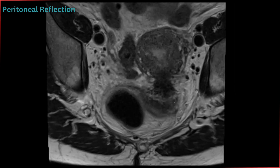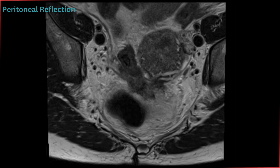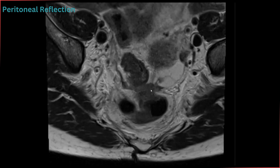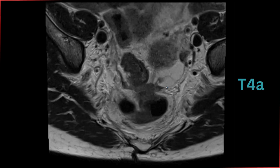This is the uterus, and this is the rectum. In the upper rectum, this whole area with irregular margins and thickening is the tumor. This band-like structure hanging into the pelvis is the peritoneal reflection, and you can see the tumor is clearly infiltrating into this reflection. This makes it T4A disease.